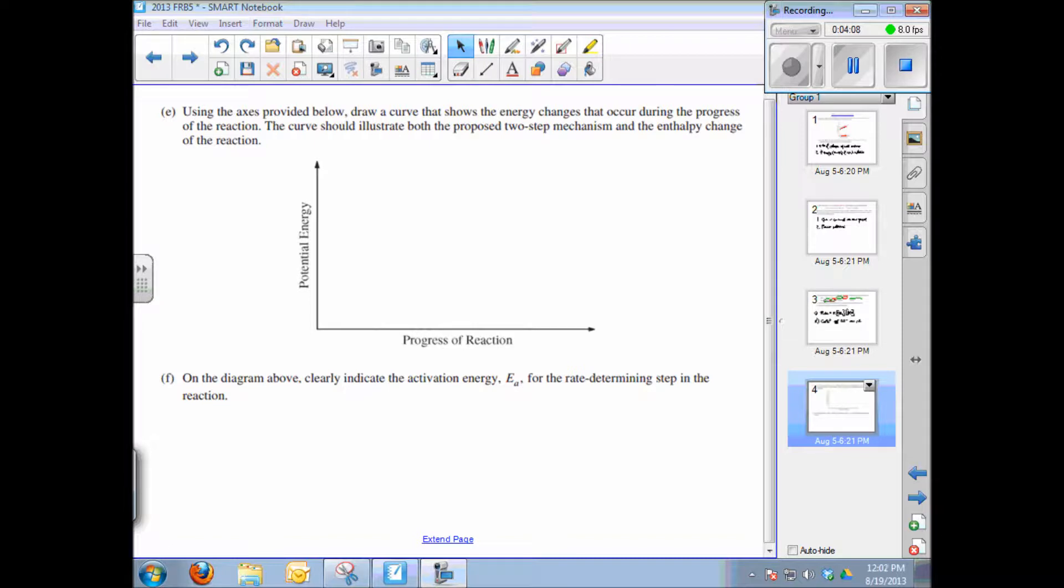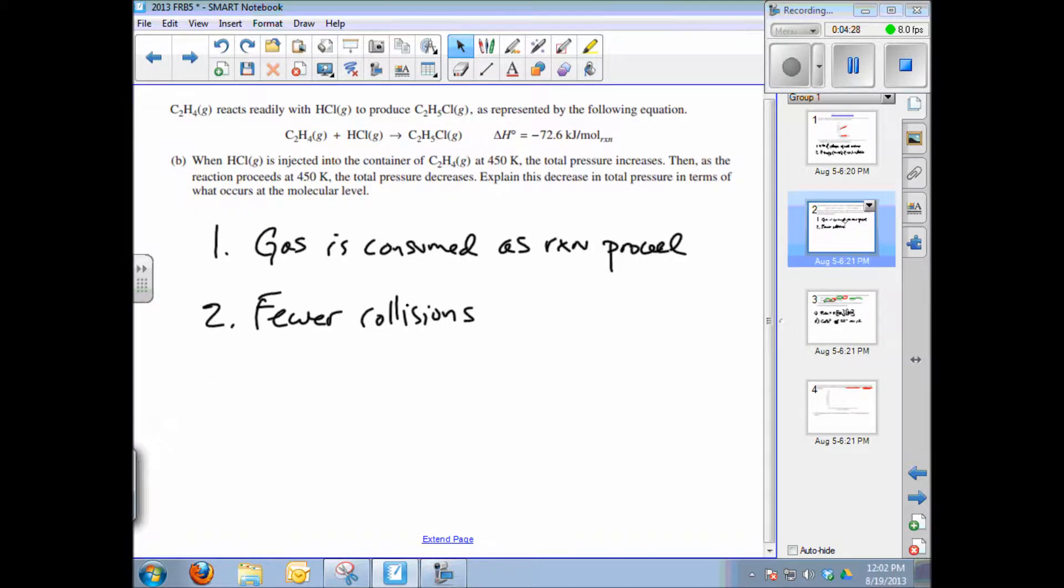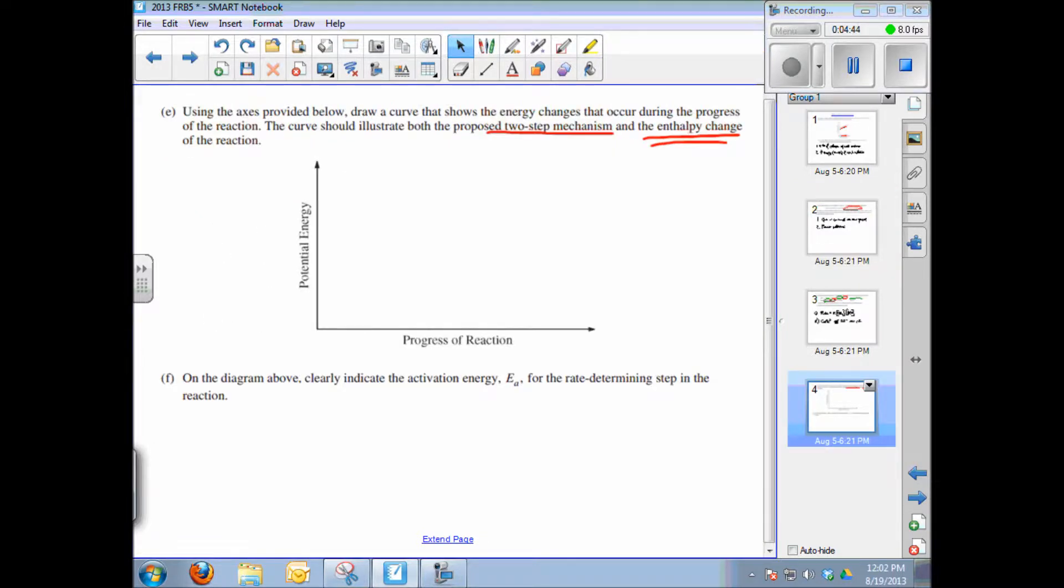Part E of the question asks you to draw an energy curve that shows the energy change across the progress of the reaction. Two things must be shown: the two-step mechanism and the enthalpy change. We know we have a two-step mechanism because we have an initial rate determining step and a second faster step. The enthalpy change is given in Part B when it was stated that the enthalpy of the reaction is negative 73 kilojoules per mole. If it's a negative delta H, that means that the reaction is exothermic. So that has to be indicated on this graph.